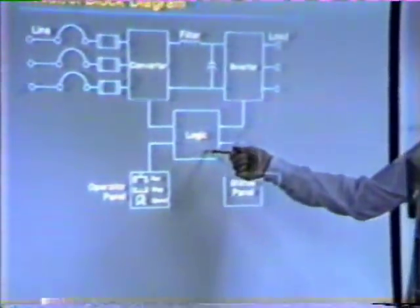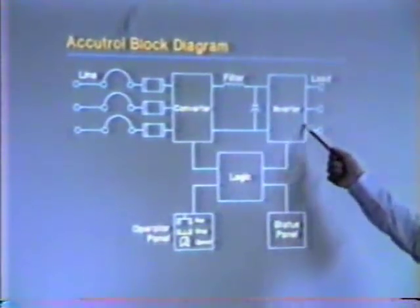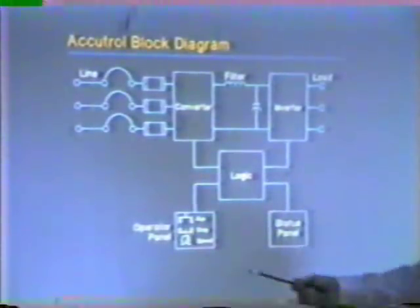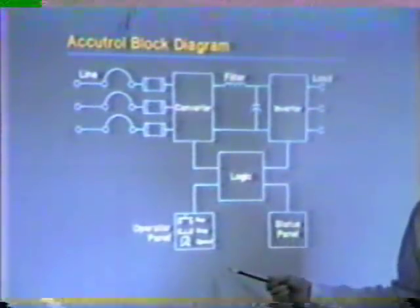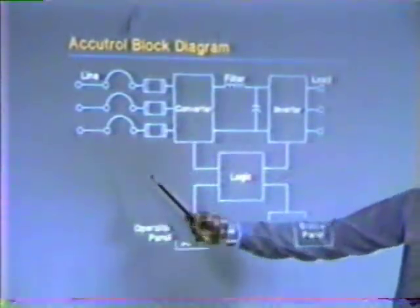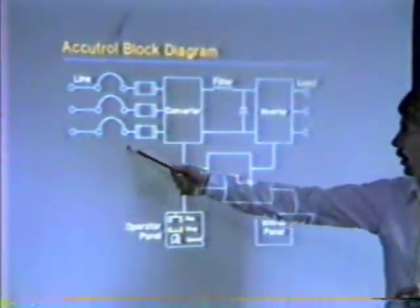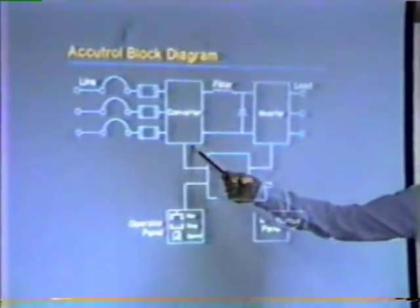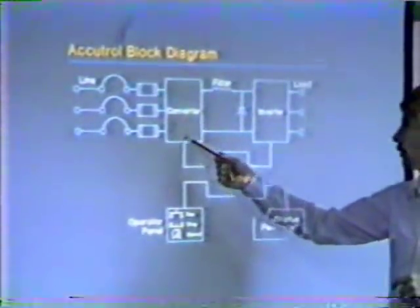The logic control has over the converter and inverter section along with the inputs that the operator will have. To begin with all that control 300, this line comes in to the converter. It's an AC to DC converter.